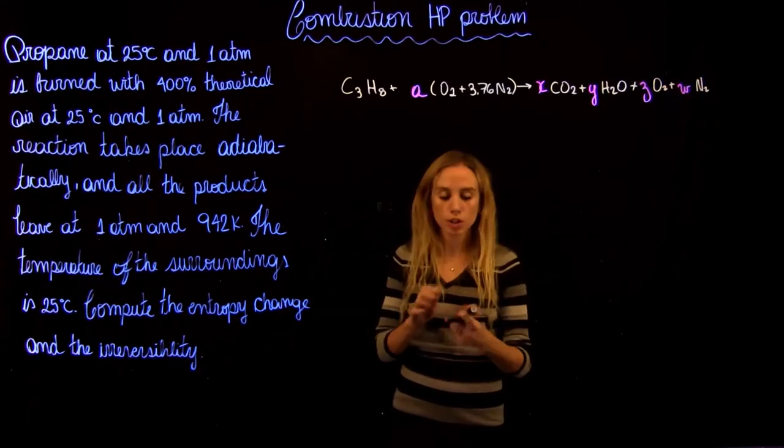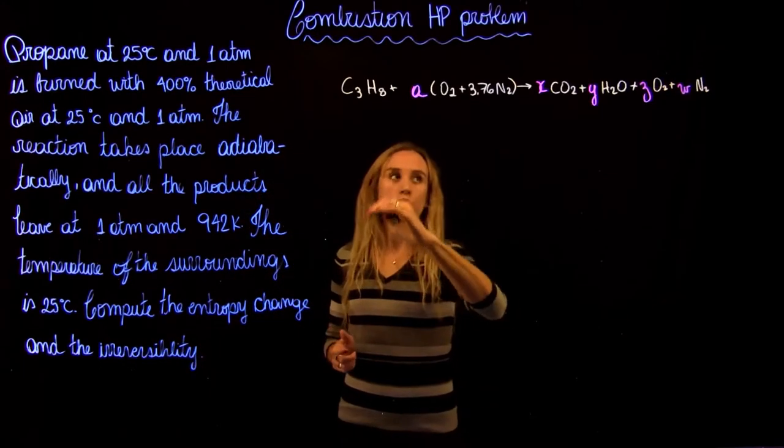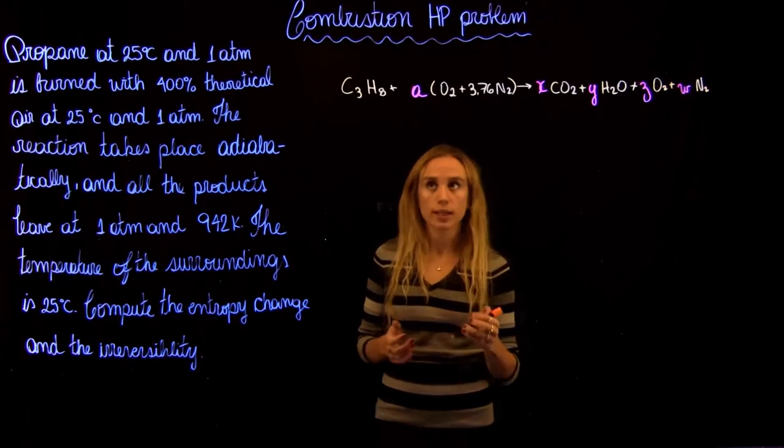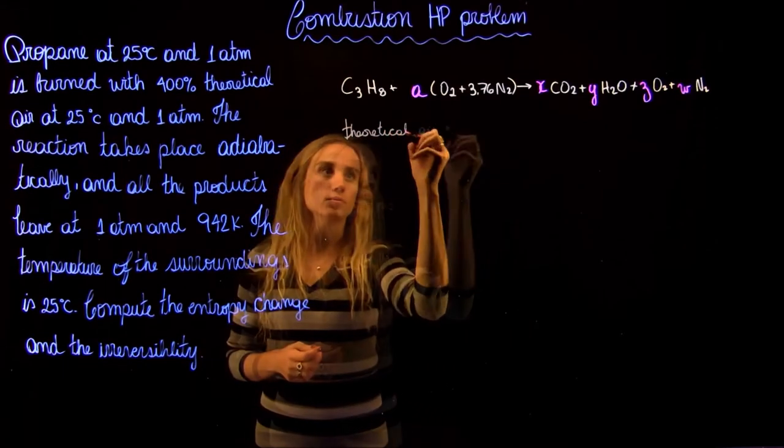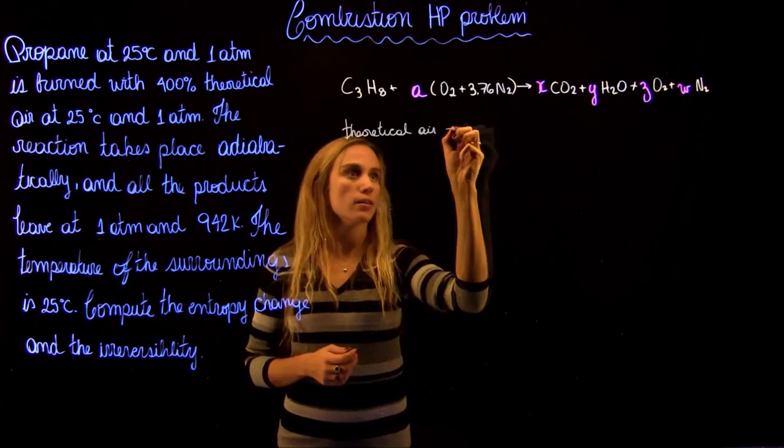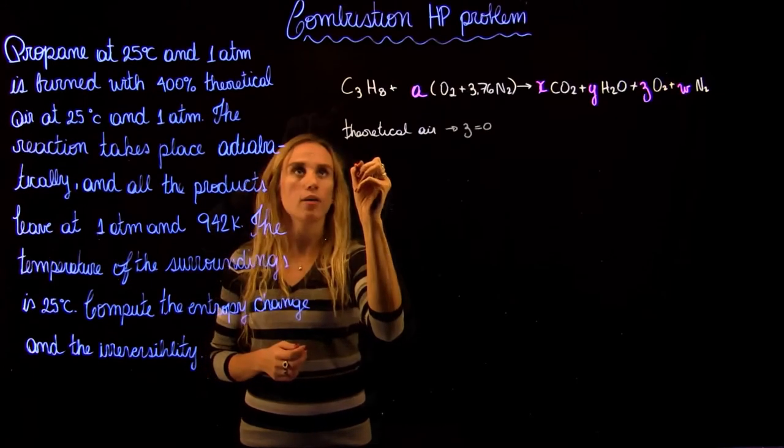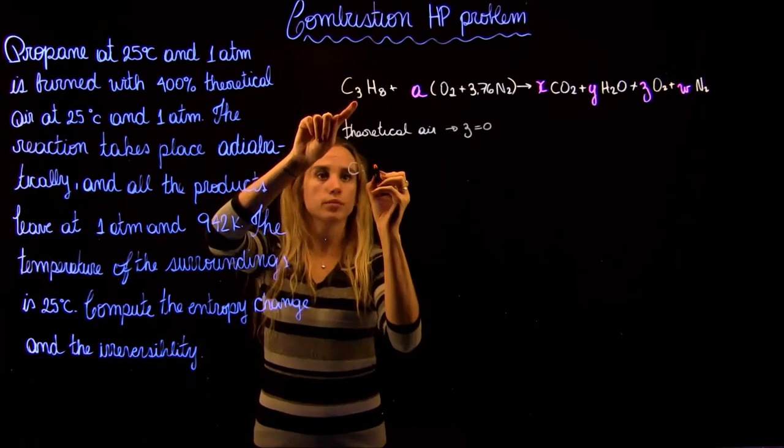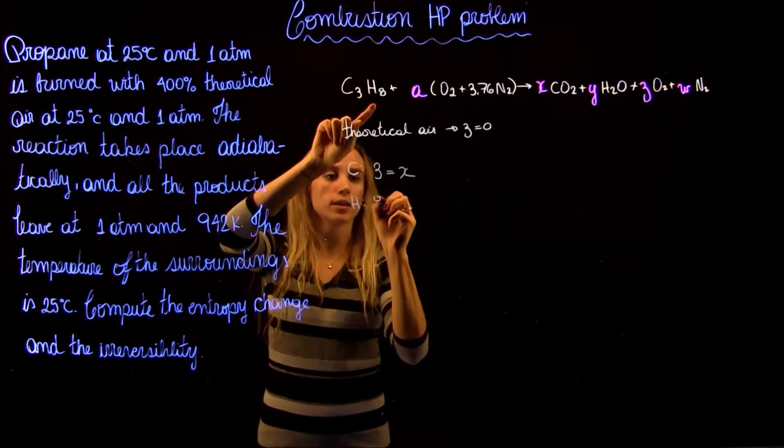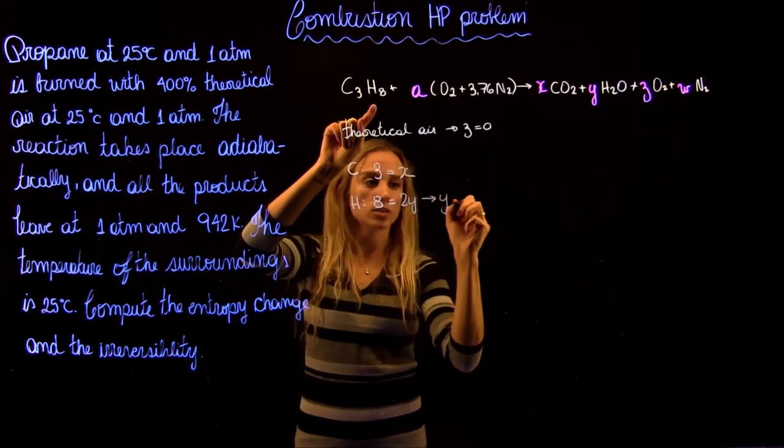We recall that in the previous problem, we're going to end up with four equations and five unknowns. So we're first going to assume theoretical air and there's no excess oxygen. So we're going to start by saying that Z is zero. Then we can find our equations. For C, it's going to be 3 equals to X. For H, it's going to be 8 equals to 2Y, so Y is going to be 4.